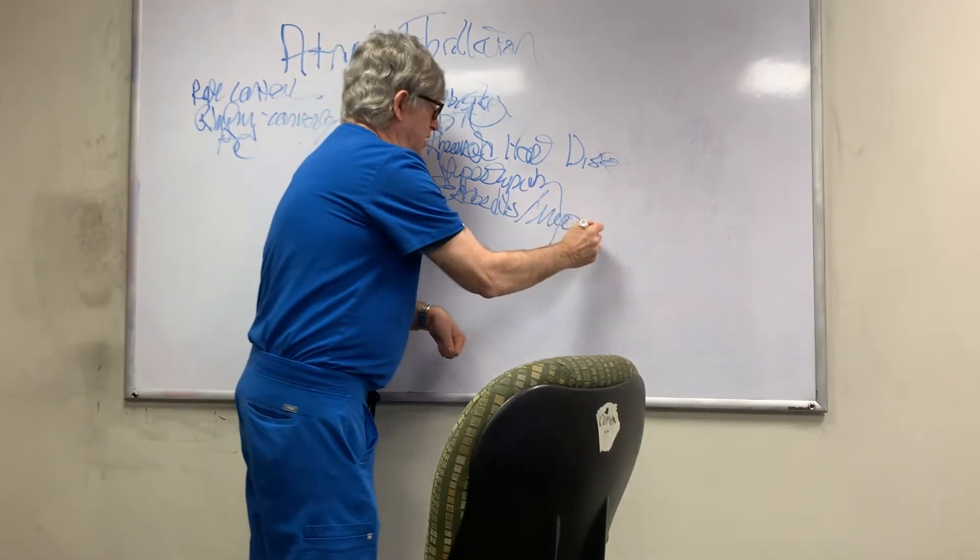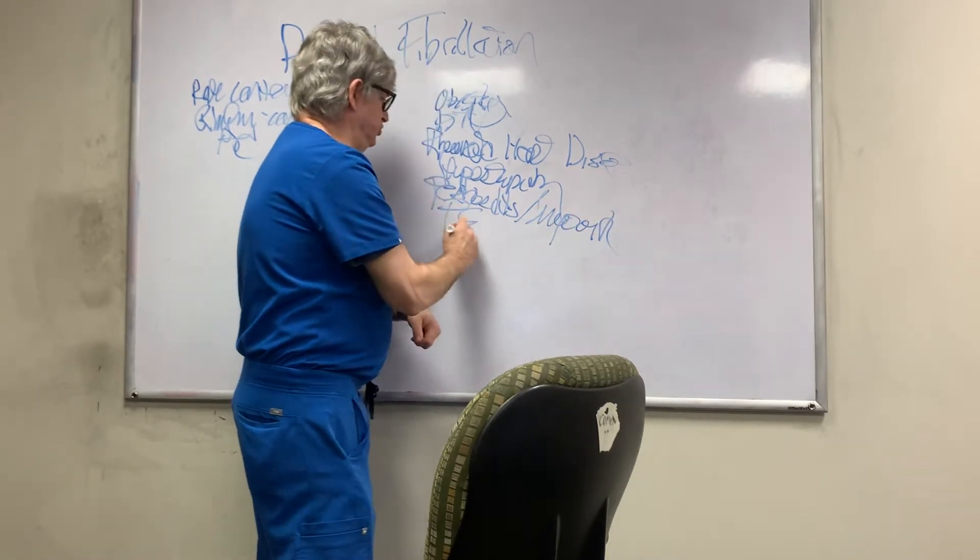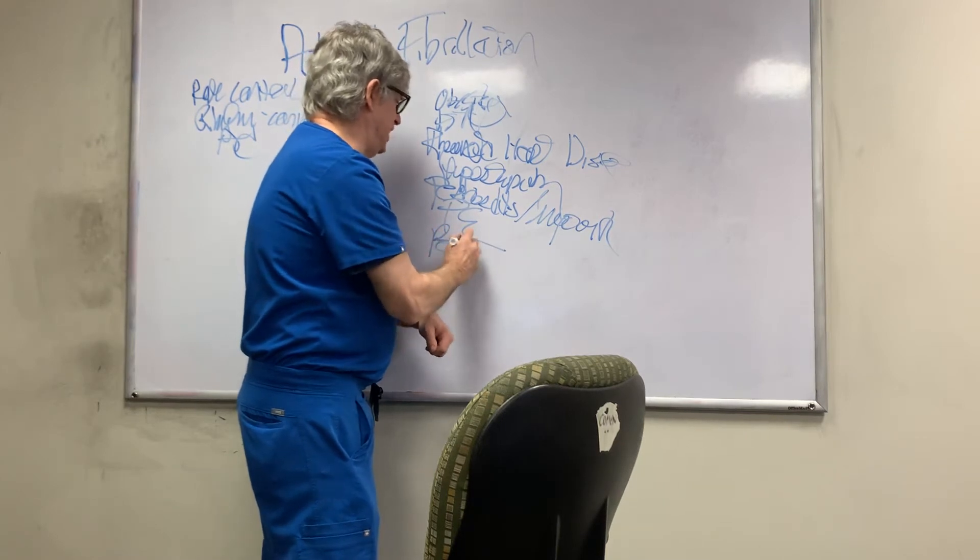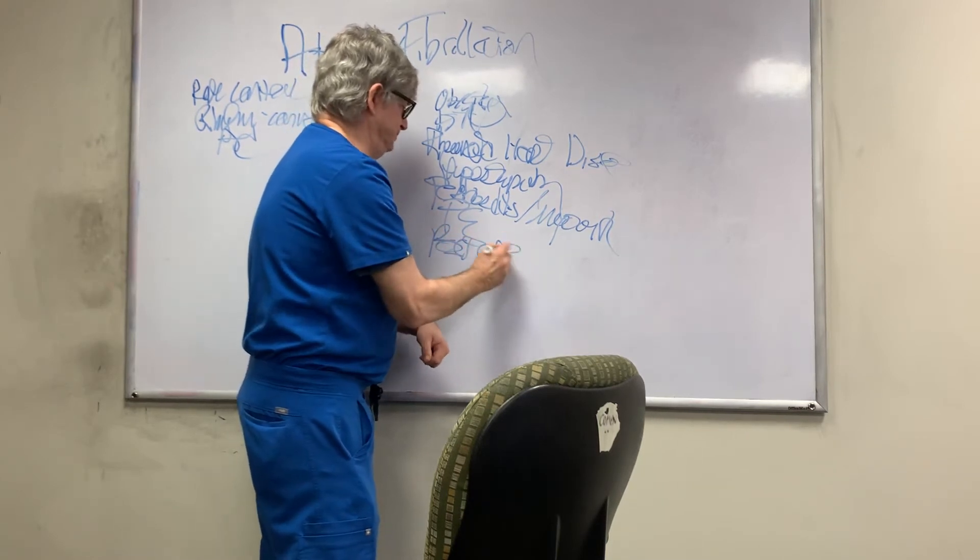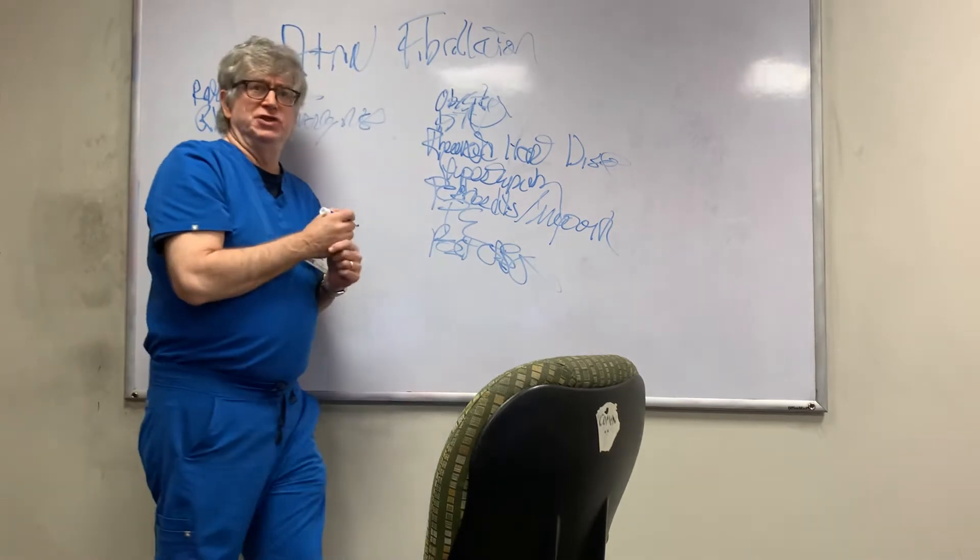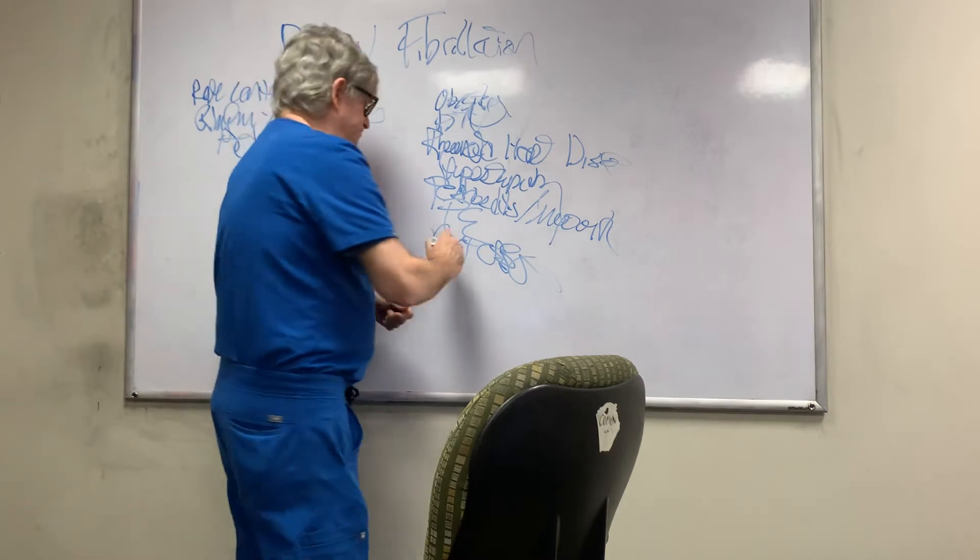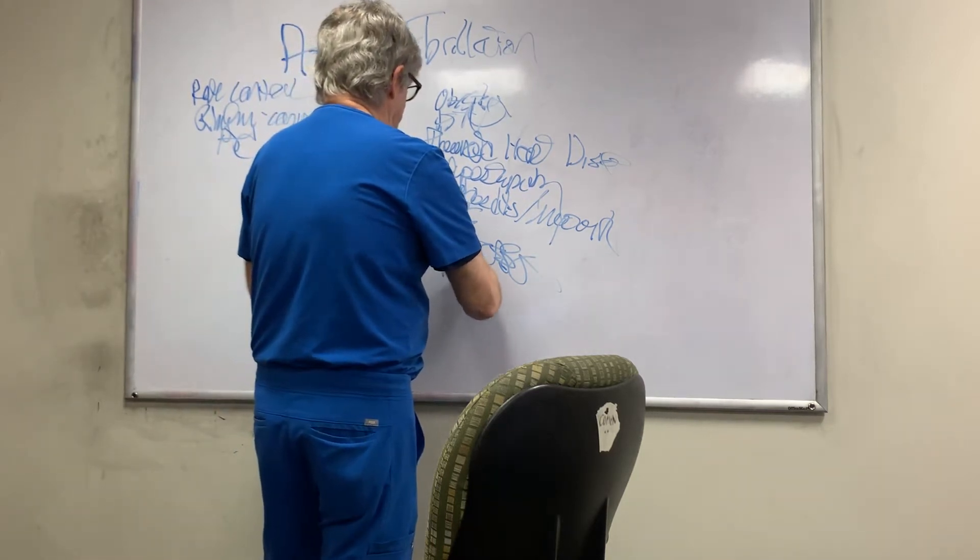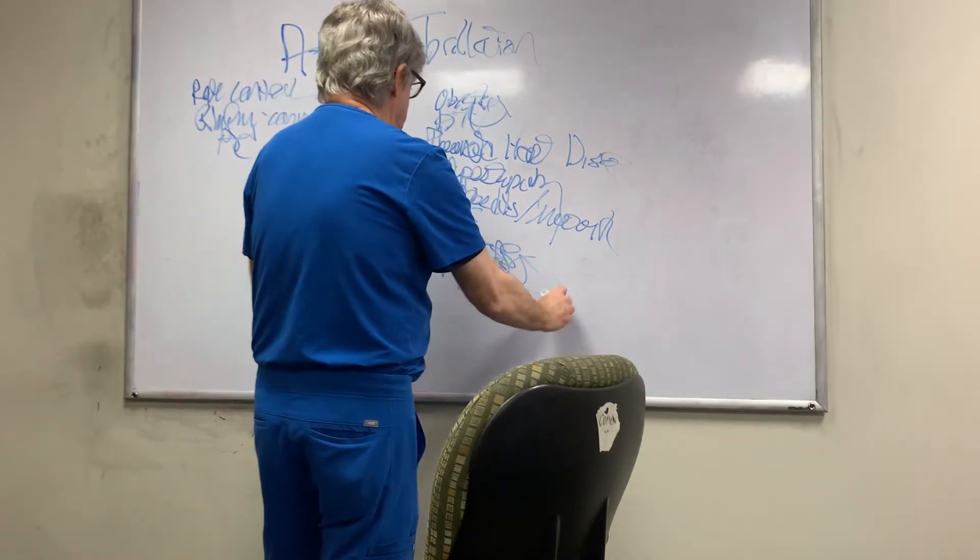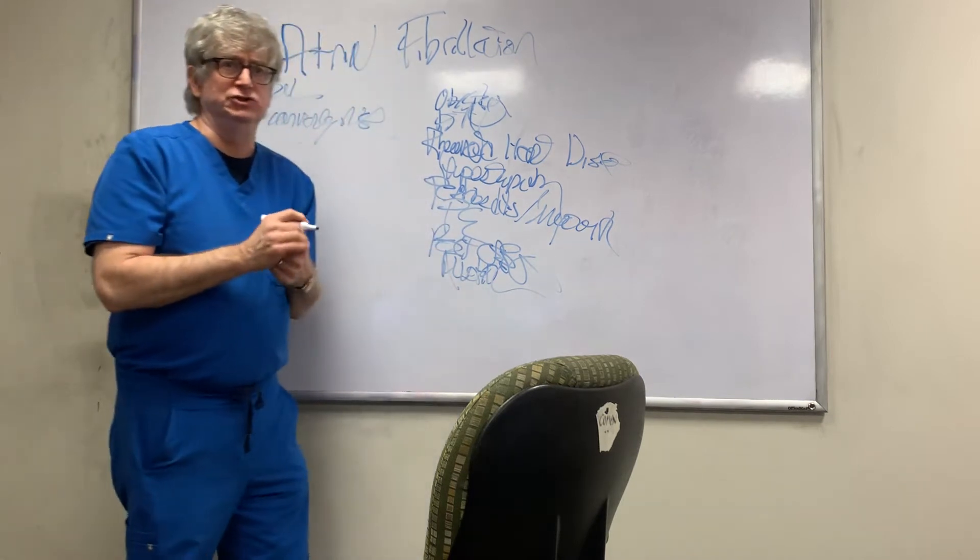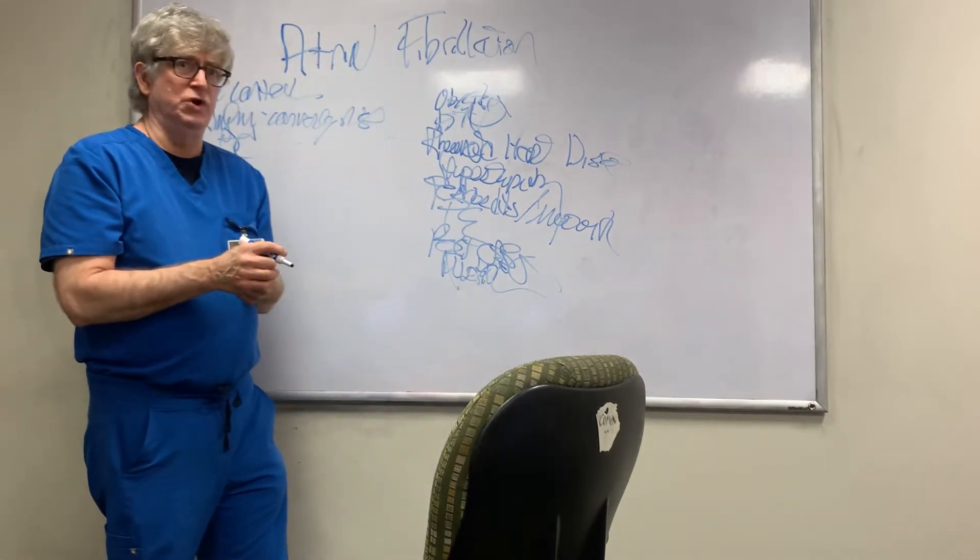Once in a while, you see this with pulmonary embolism. We used to see this a lot post-CABG. Something else to think about is alcohol toxicity, binge drinking. The term for this is holiday heart. You can see this with other toxins, like amphetamines or cocaine.